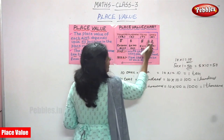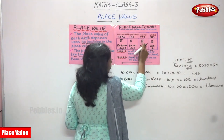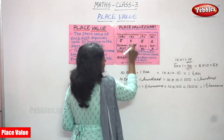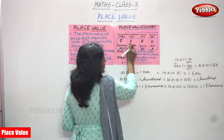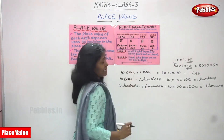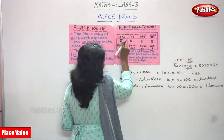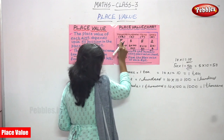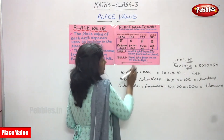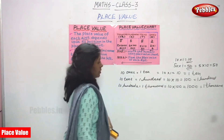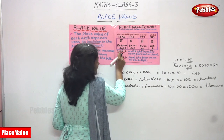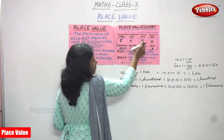5 is in the tens place, so 5 into 10 gives 50. 6 is in the hundreds position, so 6 into 100 gives 600. 5 is in the thousands place, so 5 into 1000 gives 5000. The place value of each digit: 5 is thousands, 6 is hundreds, 5 is tens, 2 is ones.